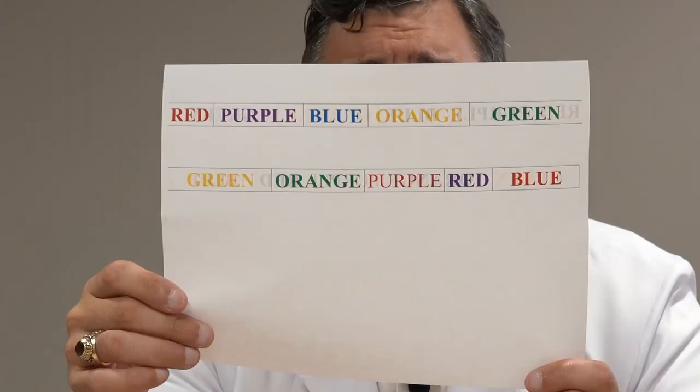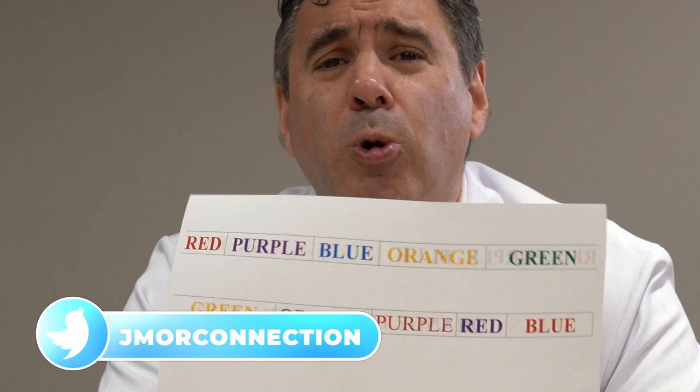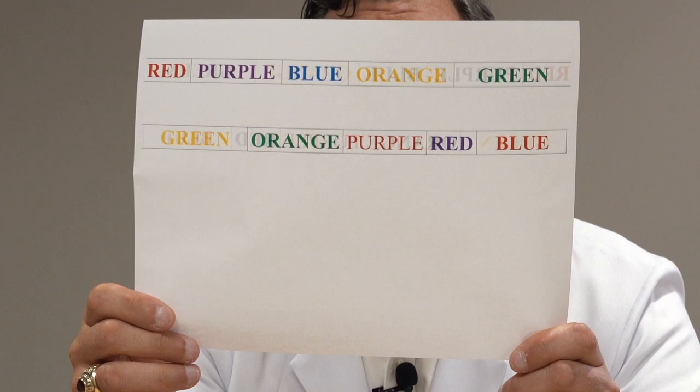Now what I want you to do is just read the words on the bottom row. Just read the words. Green, orange, purple, red, blue. Green, orange, purple, red, blue. Green, orange, purple, red, blue.